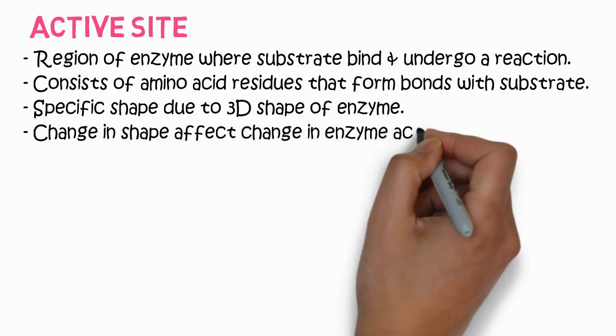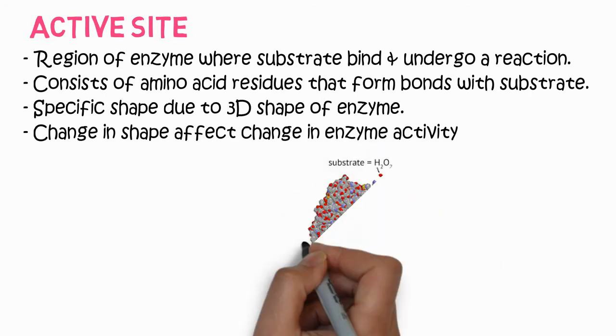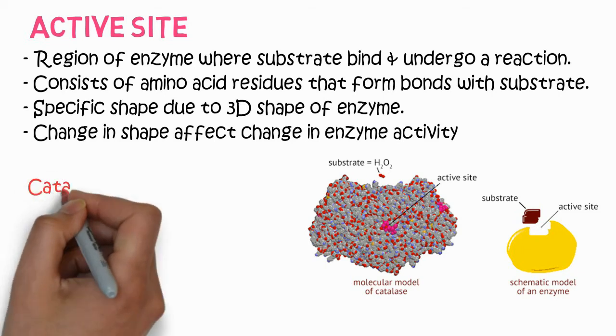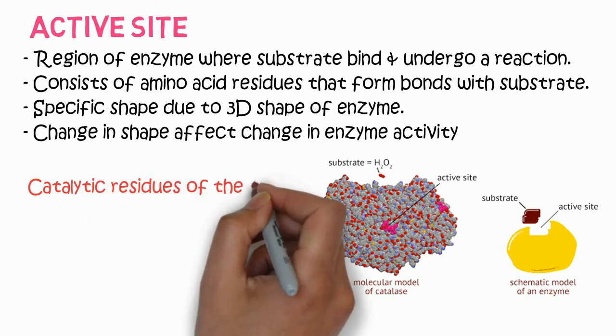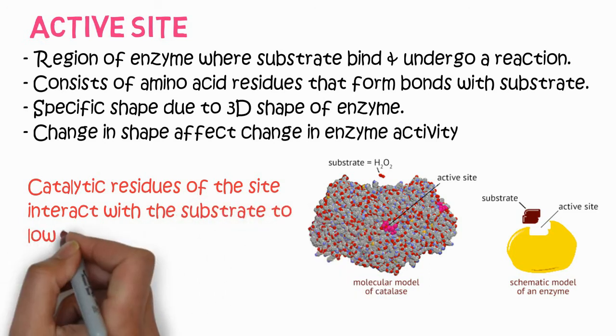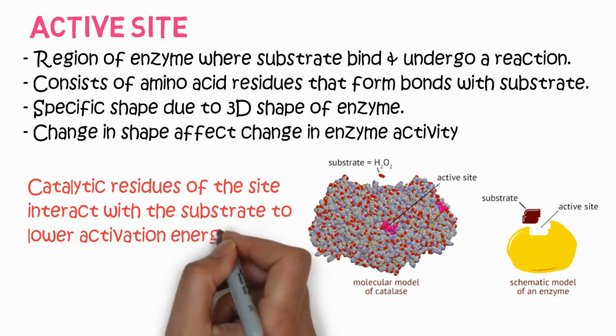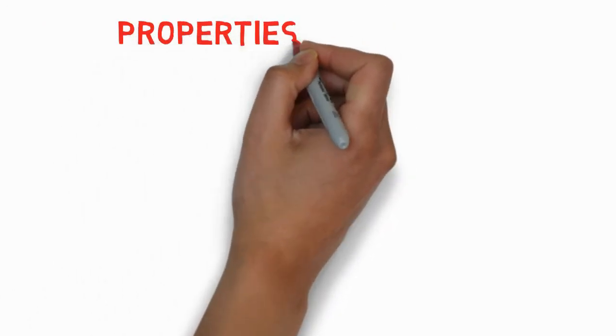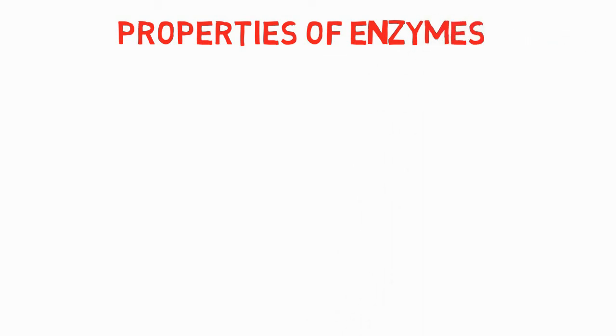Any change in the shape can affect the enzyme activity, so the shape must be usually rigid in specific enzymes while varied in the induced enzyme model system. You can see here the catalase enzyme with the active site for the water molecule. Catalytic residues of the site interact with the substrate to lower activation energy of the reactant.